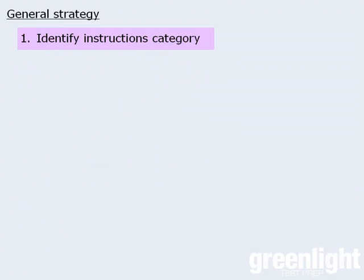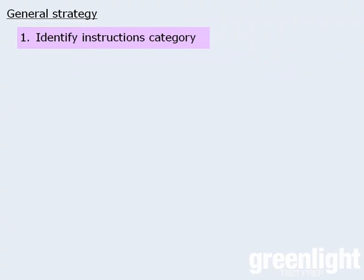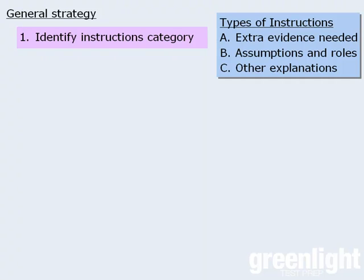Now, the first step is to determine which category of instructions accompanies the argument. This is an important step, since this will guide the focus of our analysis. In the last lesson, we learned that there are eight possible sets of instructions, and we learned that each of them can be categorized as one of the following three types.